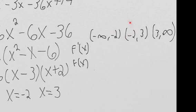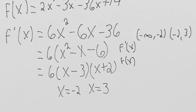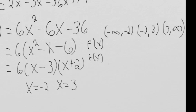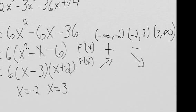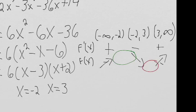Our intervals are negative infinity to -2, then -2 to 3, then 3 to infinity. The derivative is a quadratic with end behavior up, up, so it starts positive, meaning f(x) is increasing. Then it goes negative in the middle interval, so f(x) is decreasing. Then it crosses back to positive, so f(x) is increasing again. It goes from increasing to decreasing at -2, and decreasing to increasing at 3, so we have a max at x = -2 and a min at x = 3.